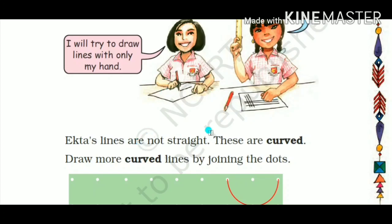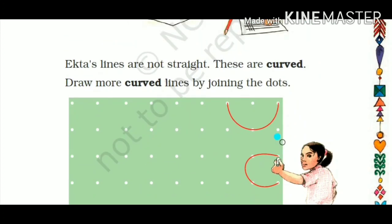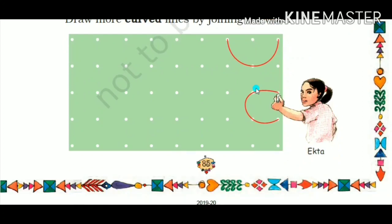Ekta's lines were not straight — they came out curved. When lines are not straight, that is known as curved lines. We want you to write neatly and straight. Lines that are not straight — that go this way and that way — those are called curved lines.